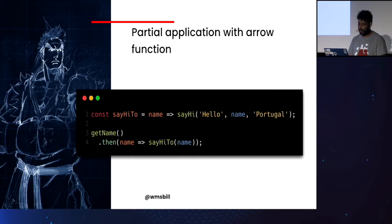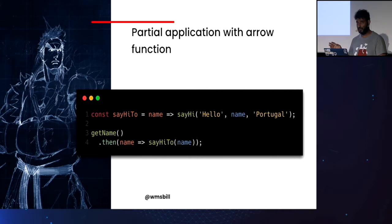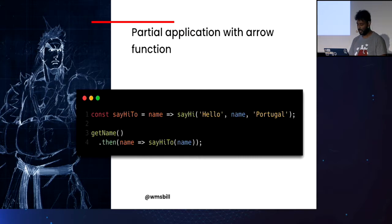We can also use partial application with arrow functions. As you can see, there are many ways to achieve partial application in JavaScript, but none in a standardized way. So that said, I want to present the next proposal.